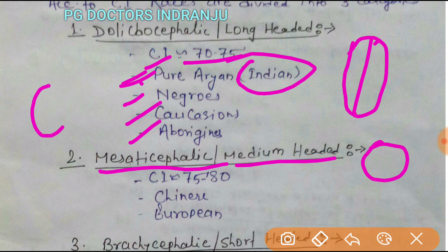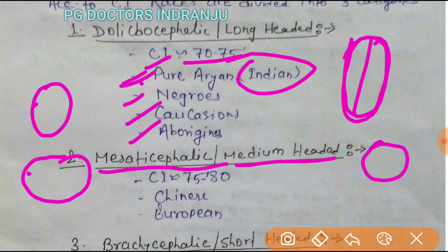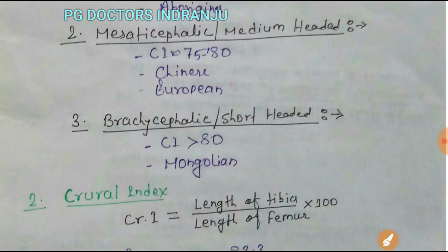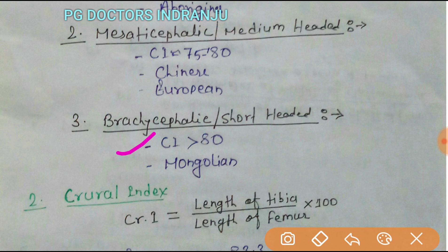Next is Mesocephalic or medium-headed, where the head is of medium size and the cephalic index is 75 to 80. It is found in the Chinese and Europeans. Then there is Brachycephalic or short-headed, where the breadth is greater and the anterior-posterior length is less. The cephalic index for Brachycephalic races is more than 80, and it is found in Mongolians. You can remember Brachycephalic and Mongolian with the mnemonic MB.